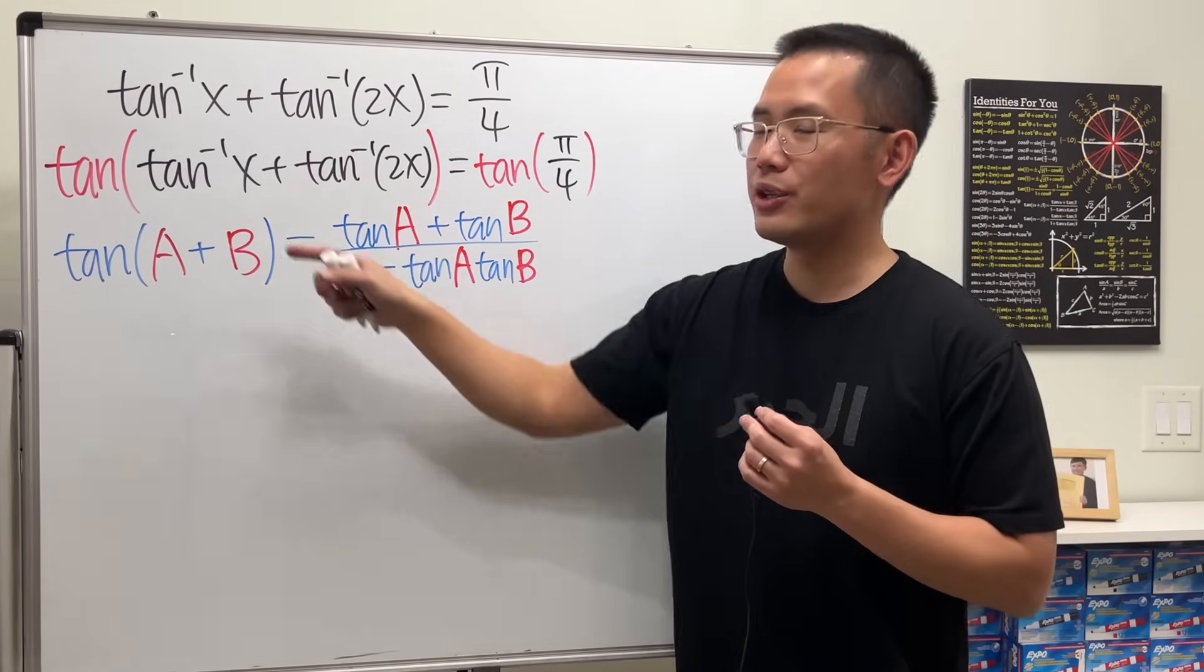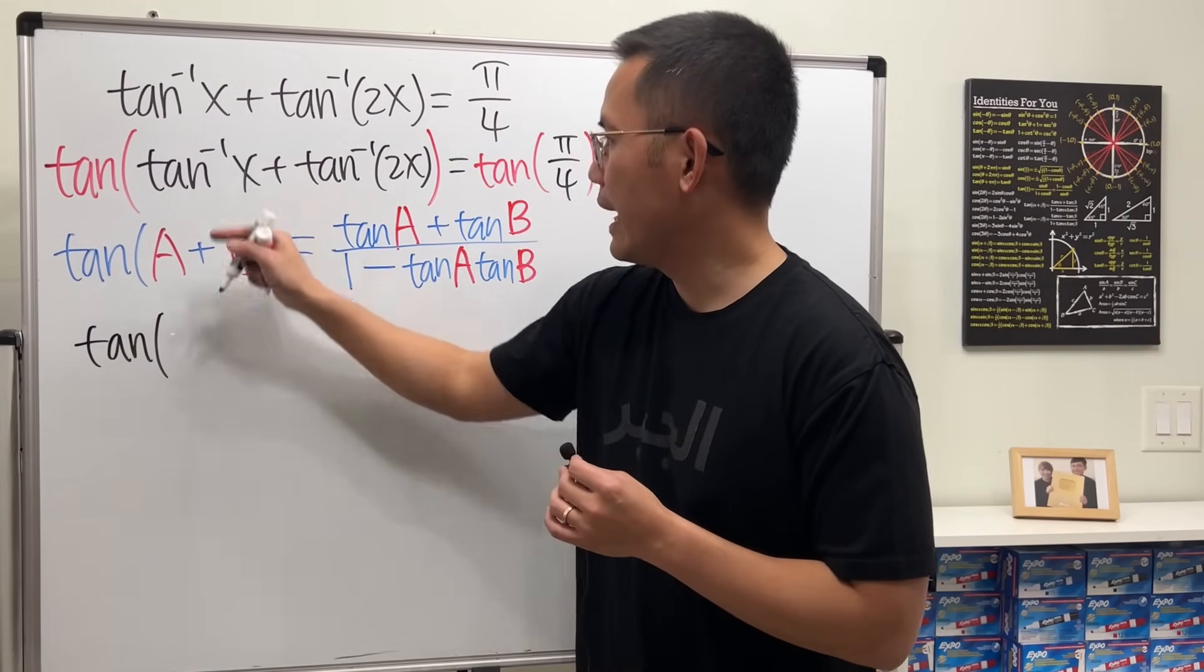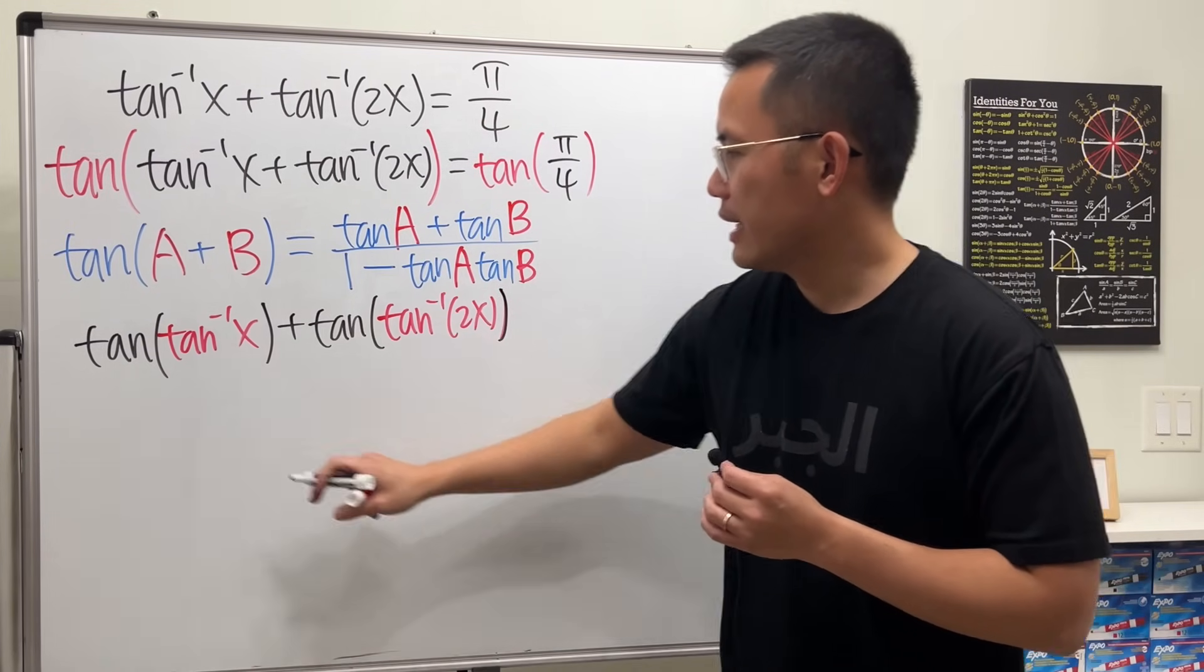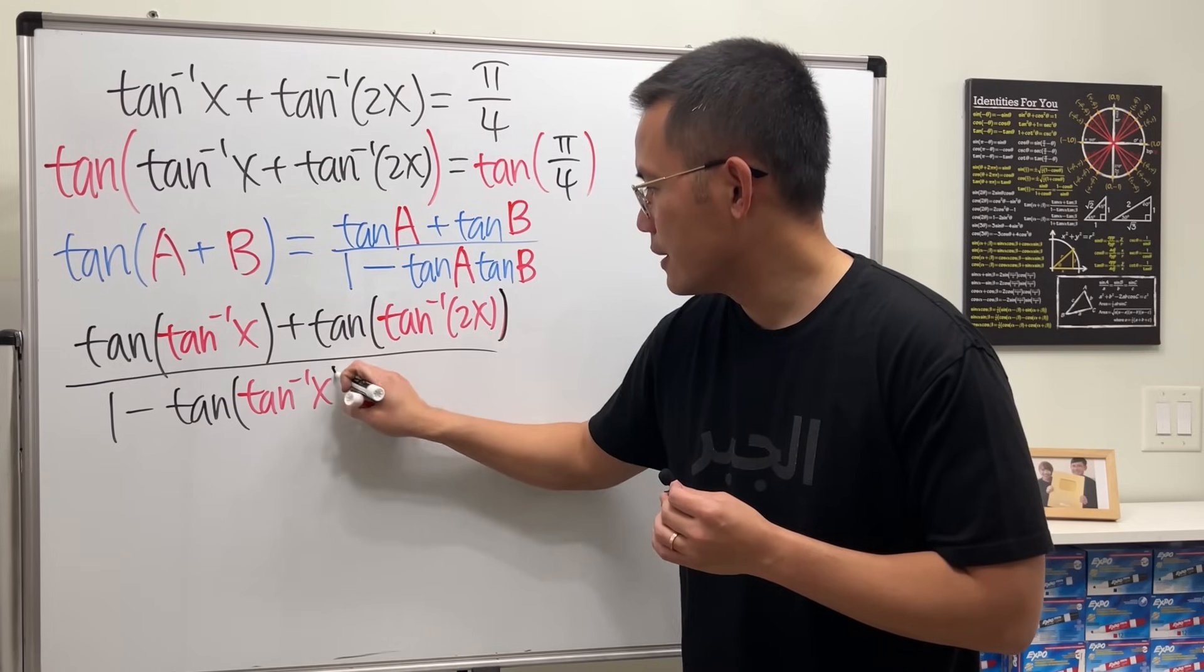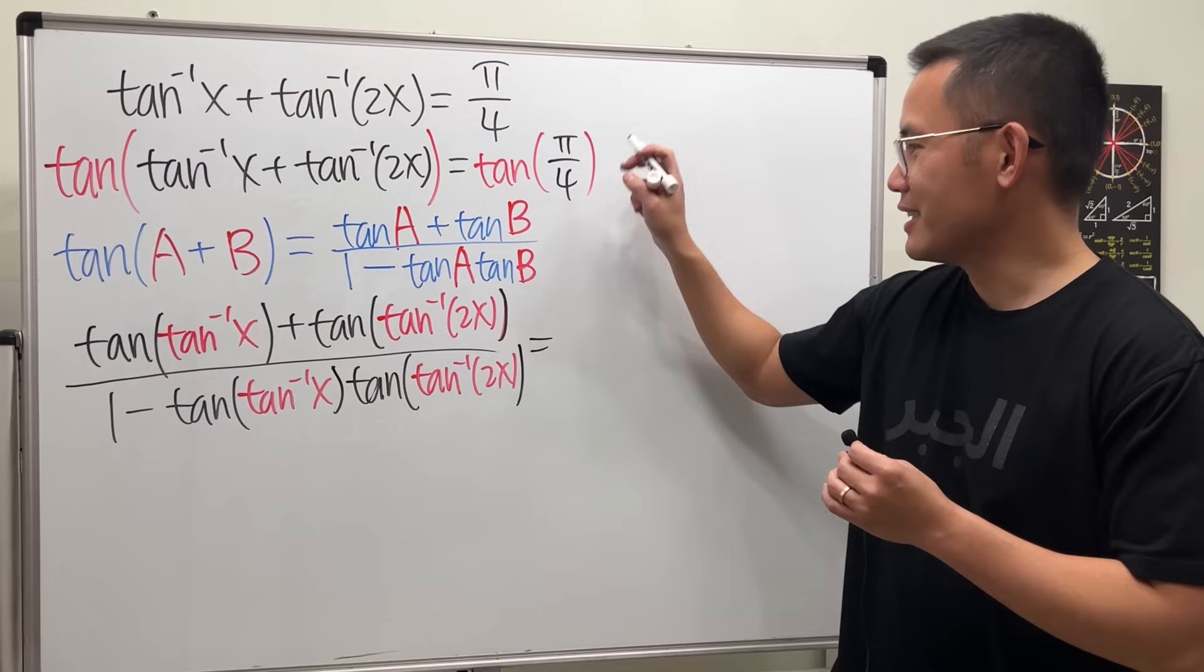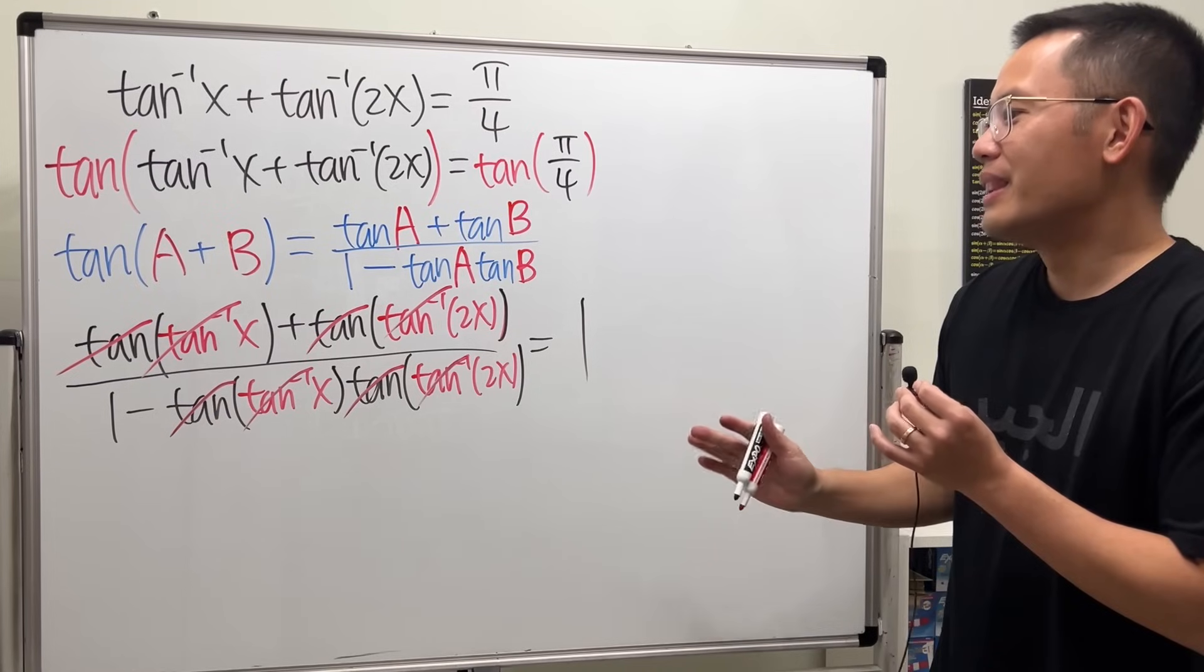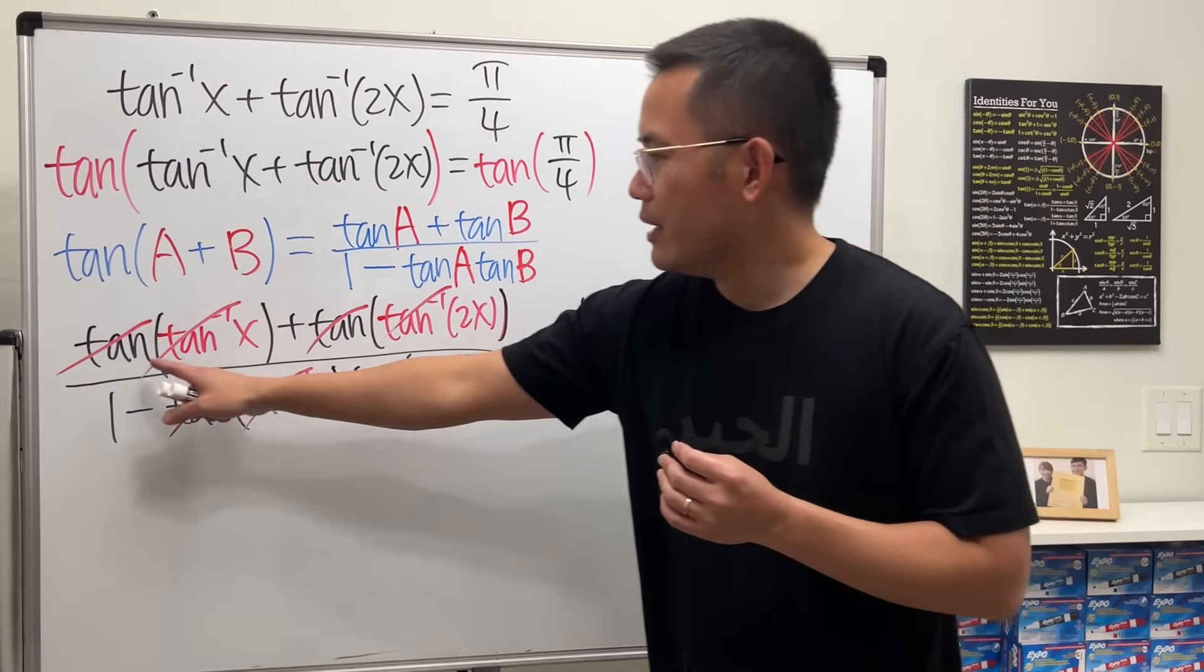So I'm just going to apply this formula with this being the a and this being the b. And now we have the tangent of inverse tangent that can legitimately cancel. I'm going to write down all the steps for you guys. So here we will get original tangent of inverse tangent of x, and then we add original tangent of inverse tangent of 2x, which is the b. And then all over 1 minus tangent of inverse tangent of x times tangent of inverse tangent of 2x.